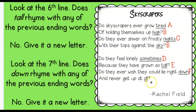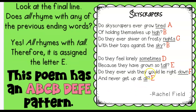And never give up at all. Does all rhyme with tired? Or high? Or nights? Or sky? Or sometimes? Or tall? Or down? Well, if you said it rhymes with tall, then you're right. So this poem, it's only two stanzas, would have an A, B, C, B, D, E, F pattern. The only rhyme we have here is in the first stanza, line two and line four.